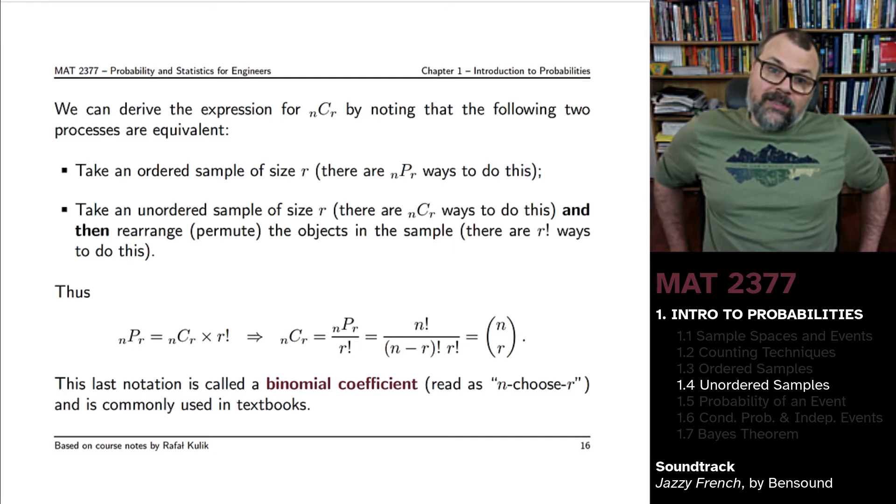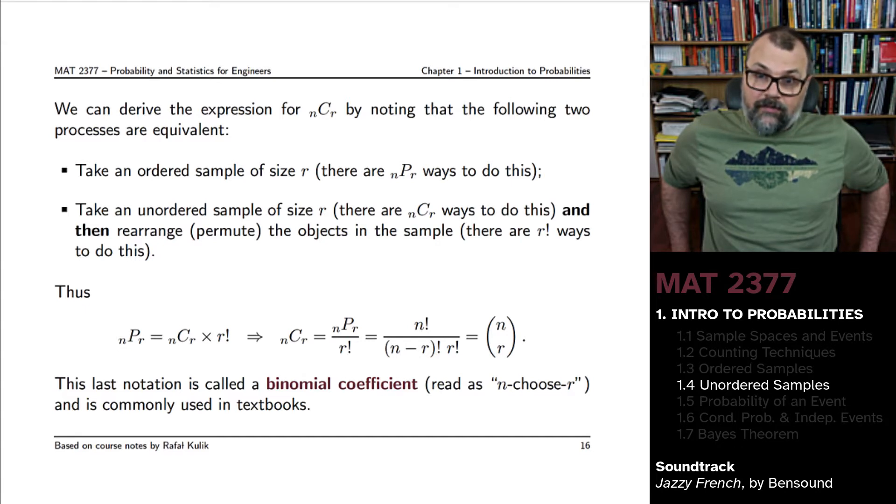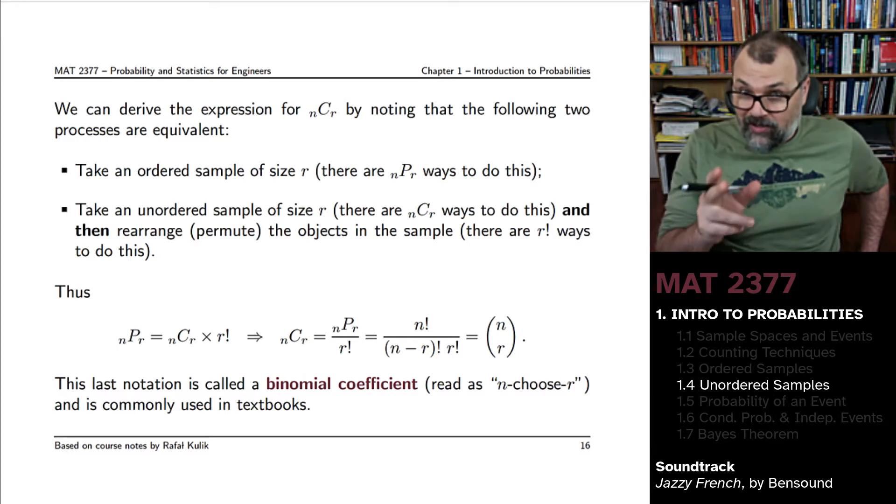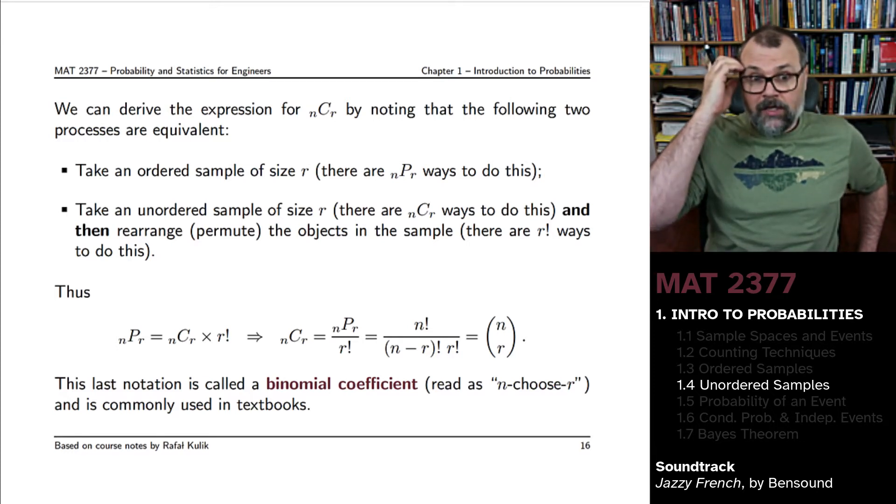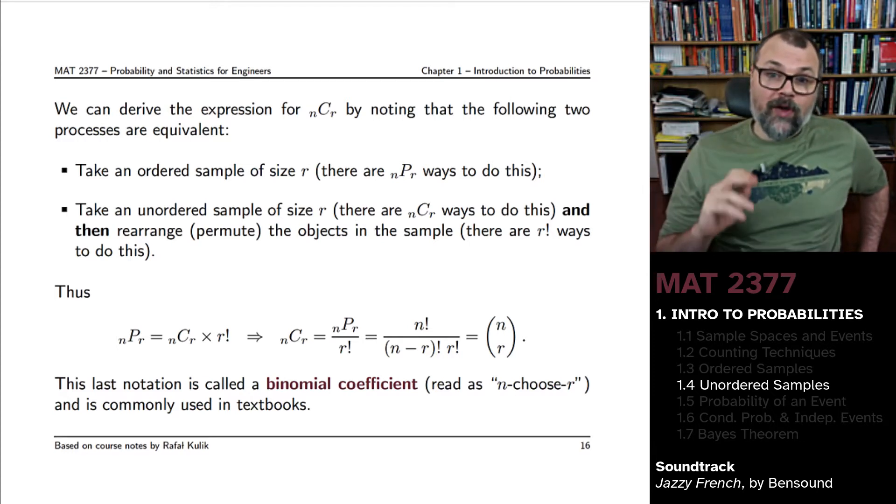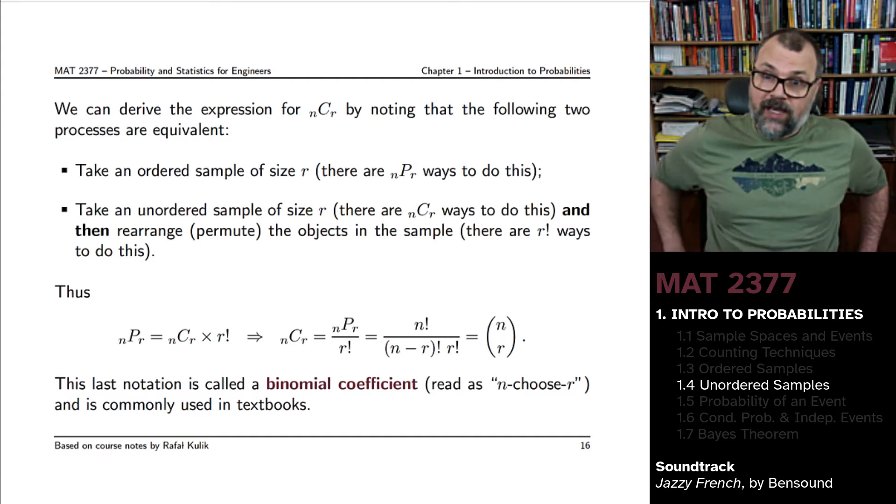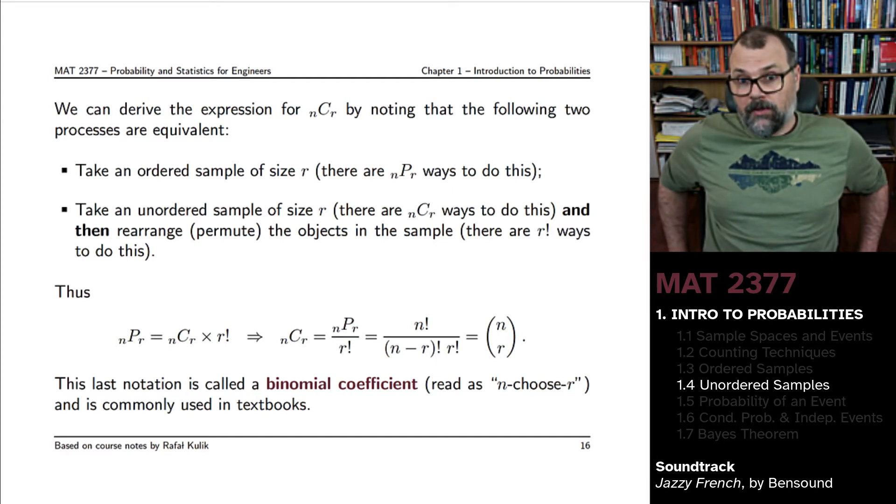And then we will take an unordered sample of size r. There's going to be nCr ways to do this, and that's the number we're trying to find. And then we will rearrange, we'll permute the objects in the samples. There's r factorial ways to do this.